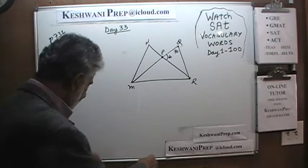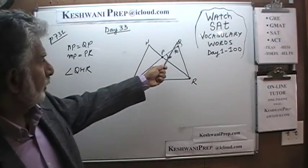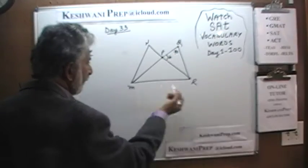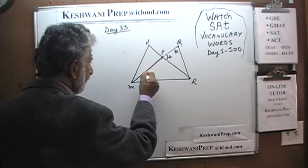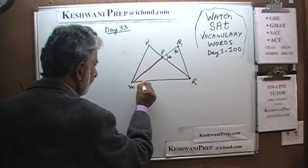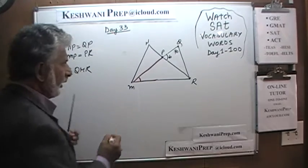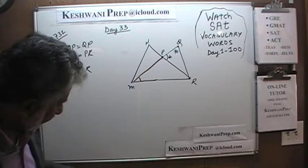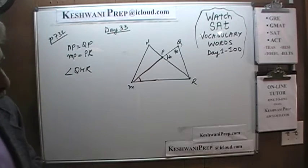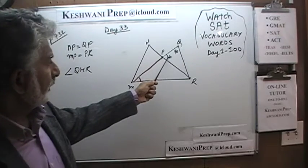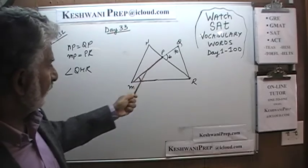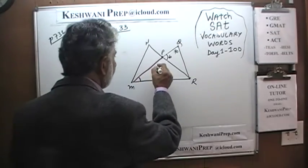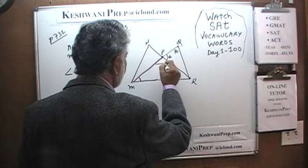The angle that we are interested in is QMR — this angle right here. We are going to find out what that angle is. We know that this angle is 60, and we also know this is a straight line — QM is a straight line. This angle is 60, therefore this angle has to be 120.